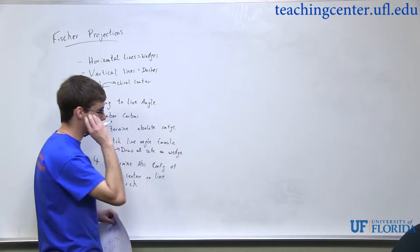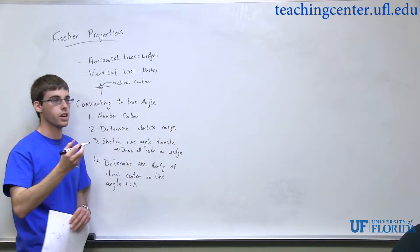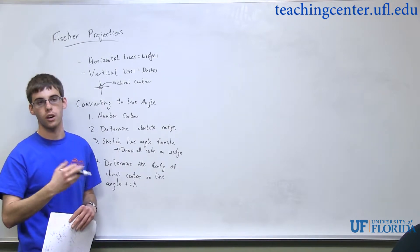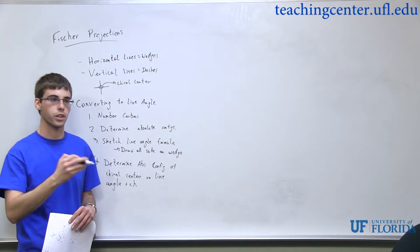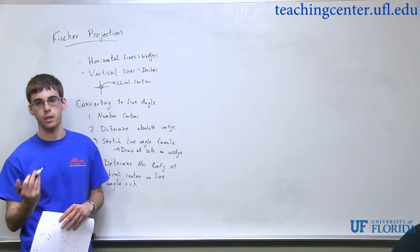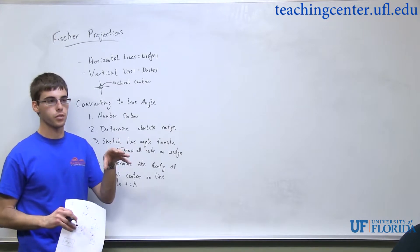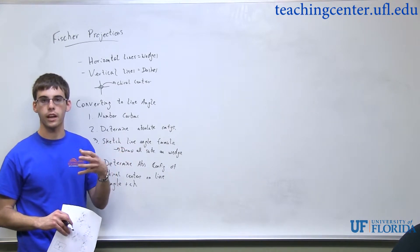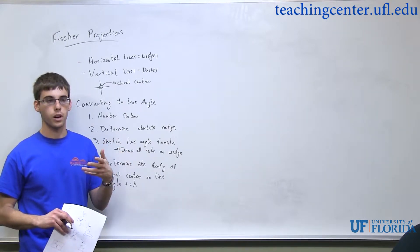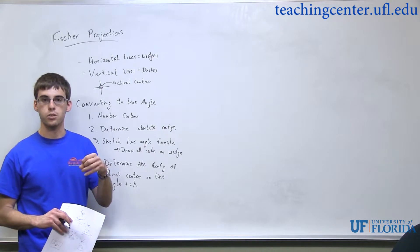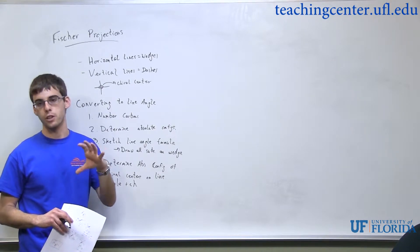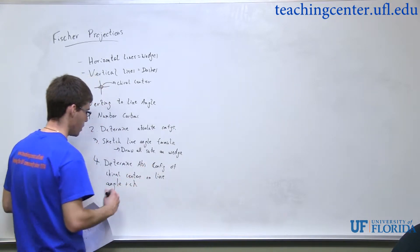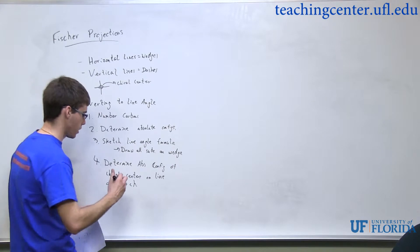So the key is you want everything that was R on the Fischer to be R on the line-angle, and everything that was S on the Fischer to be S on the line-angle. So if you've drawn the line-angle and you have something that's R, well, to get it to S, you just flip it from a wedge to a dash. And we're going to do an example to kind of make that sink in.